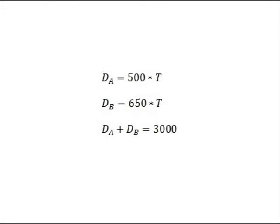Now we need to set up our equations. Use the distance formula twice, once across each row, to obtain the equations you see here. Since we have a total distance, we can also sum the distance column to obtain another equation. So, D_A equals 500 times T, D_B equals 650 times T, and D_A plus D_B equals 3,000.